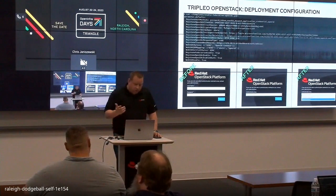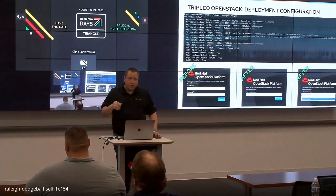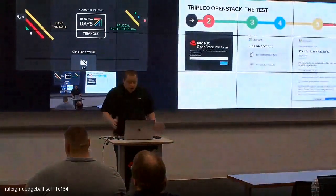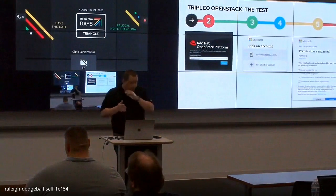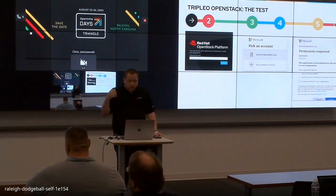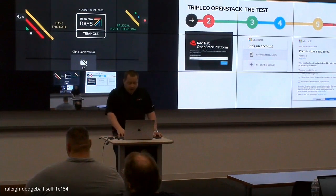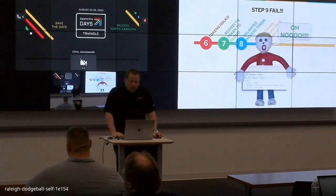Before, when you first go to the login page, you get the basic username and password login. Afterwards, like you saw, we have the little dropdown that says OpenID Connect. You go through it and click that. This is what it should look like if you're not already logged into Azure — you'll get prompted to pick your account, choose your account, and it requests permissions to be able to see your basic profile and send the information back to OpenStack.